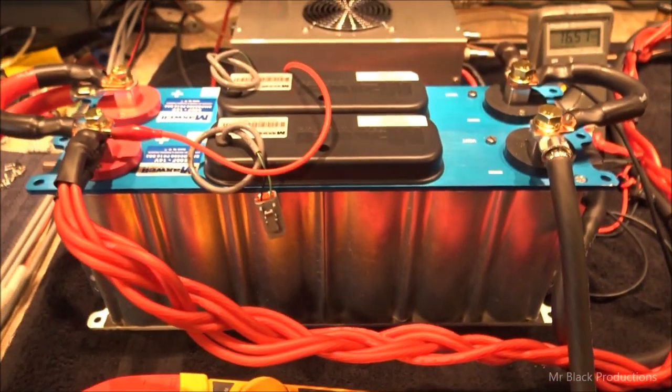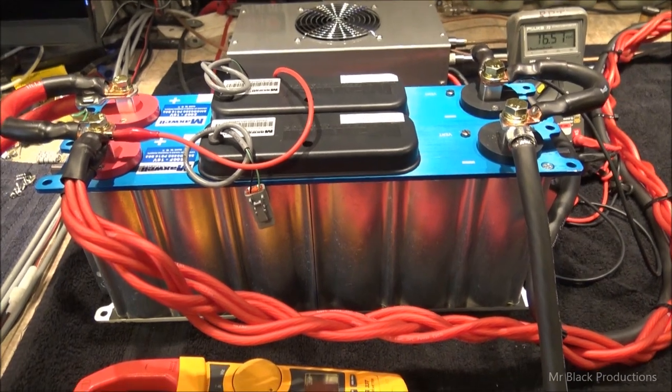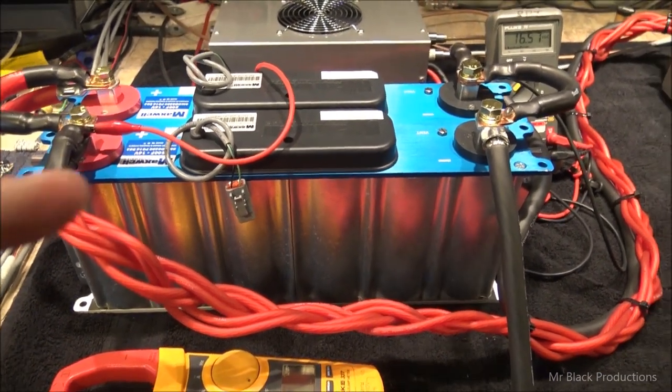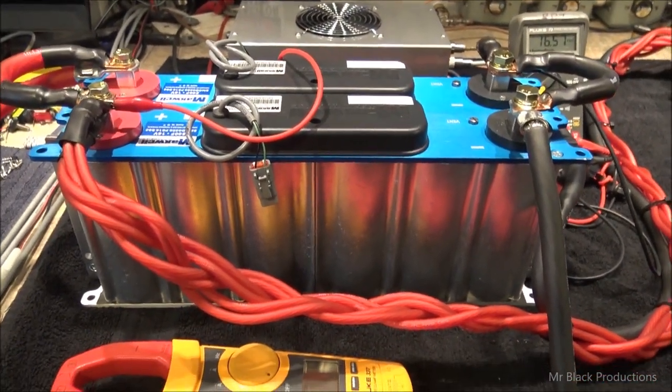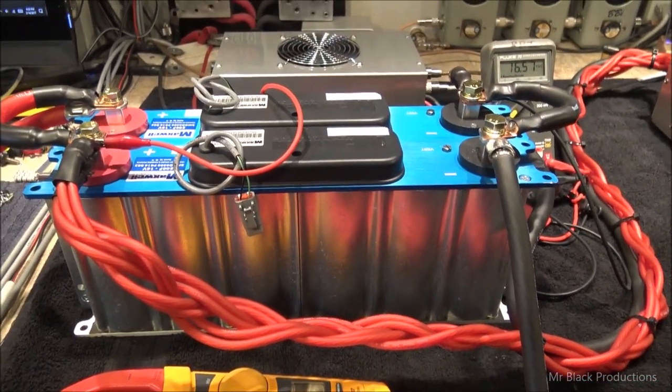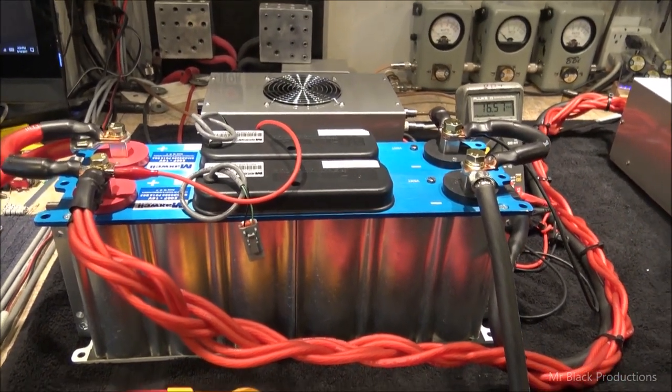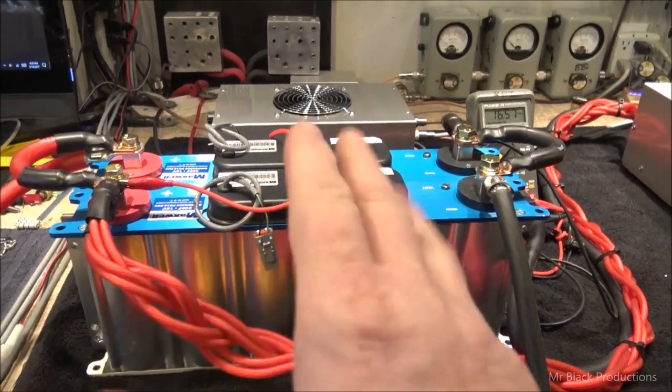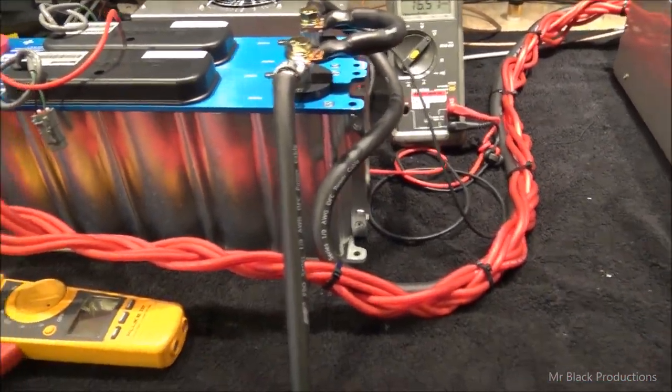The primary job of these capacitors is to store energy and then give the energy back to the circuit when it's needed. It blocks direct current and allows AC current to flow by it. I wanted to make sure that was out there because I totally got that ass backwards in the last video I did. It's my fault.